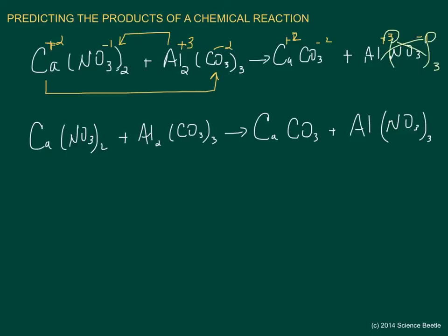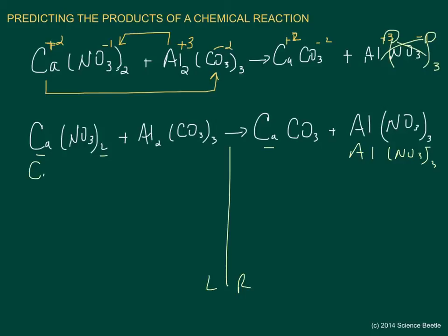Here's the rewritten equation with all neutral compounds on either side. I'll divide it left and right for convenience. Starting with calcium: one on the left, one on the right. Nitrates: two on the left, three on the right — since three is odd, I'll add another Al(NO₃)₃ to get six nitrates on the right. That means I need six nitrates on the left, so I add more calcium nitrate to get a coefficient of three.